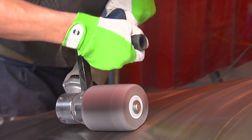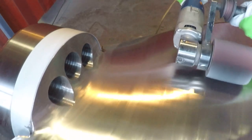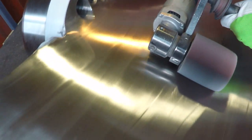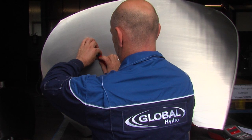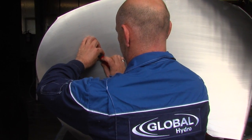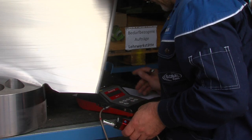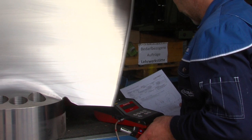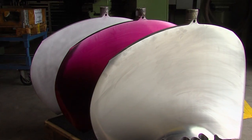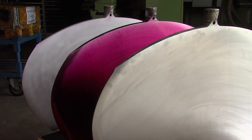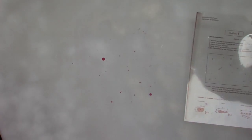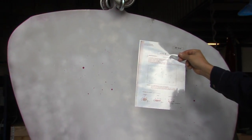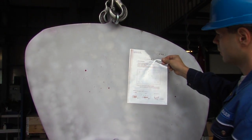Following the fine milling process, the complete surface of each blade is polished by hand. The surface is then checked and the results recorded in accordance with DIN EN ISO 4287. Before assembly, the Kaplan blades are checked for surface cracks and pores using two-color dye penetration testing as per DIN EN ISO 3452-1.